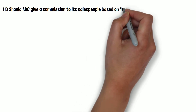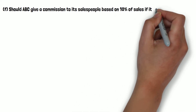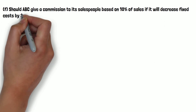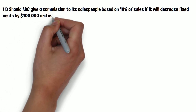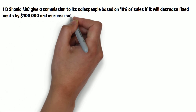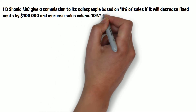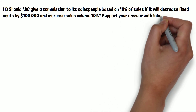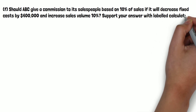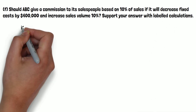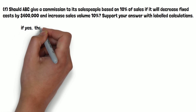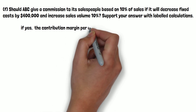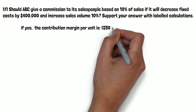The last question: should ABC give a commission to its salesperson based on 10 percent of sales, if it will decrease fixed costs by $400,000 and increase sales volume by 10 percent? Support your answer with labeled calculations.